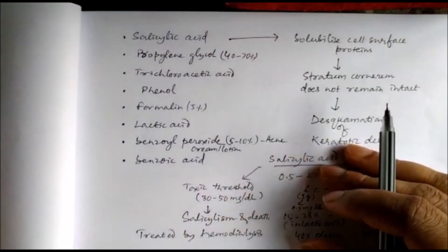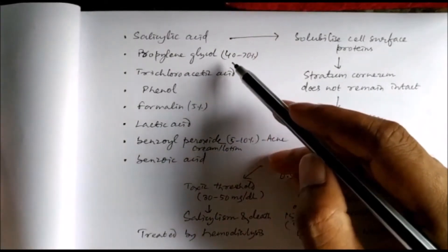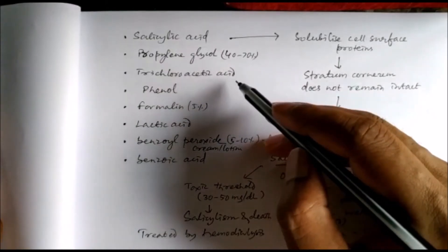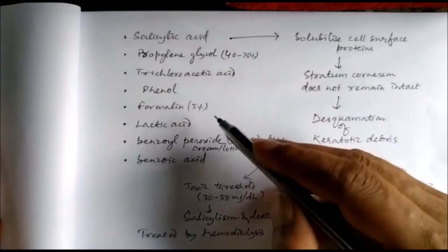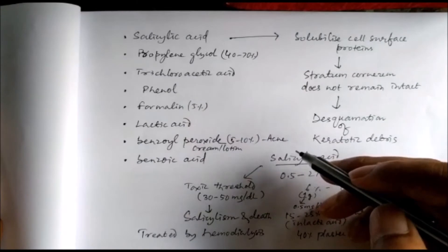Some of these drugs are salicylic acid, propylene glycol which is often used in combination with salicylic acid, trichloroacetic acid, phenol, formalin 5% (formaldehyde solution), lactic acid, benzoyl peroxide which is 5 to 10% cream or lotion, and benzoic acid.